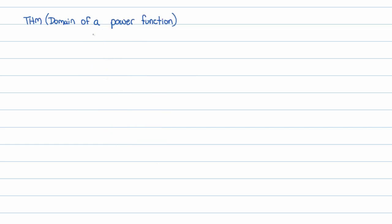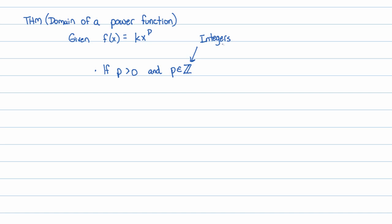Now, let's talk about the domain of a power function. Given f(x) = kx^p, there are a couple of situations. If p is greater than 0 and p is an element of the integers — that little Z means the set of integers — so it's positive and it's an integer, in other words it's a natural number, then the domain is all reals.